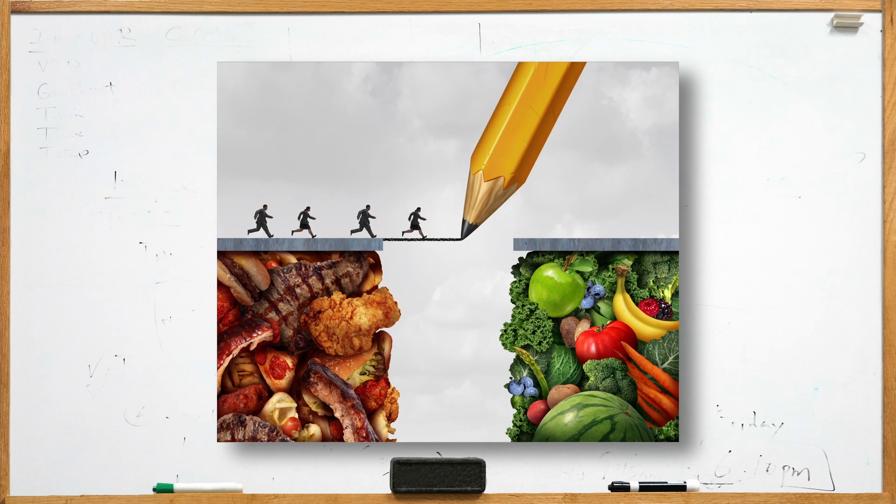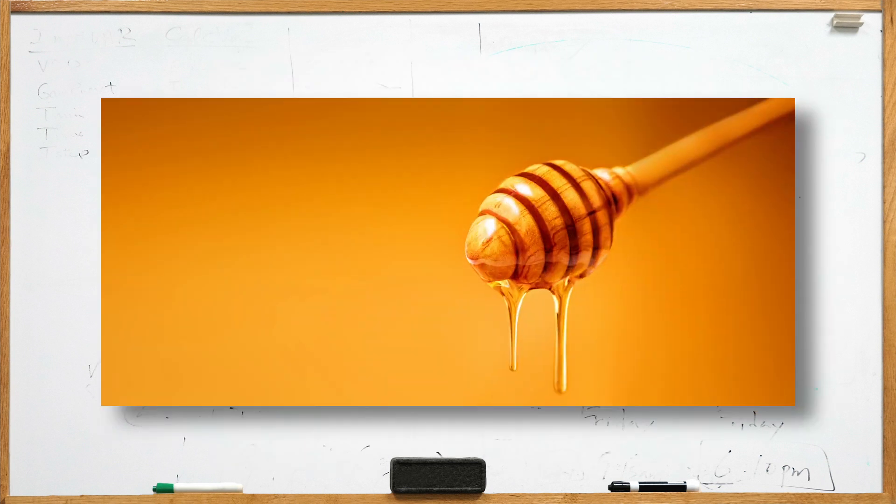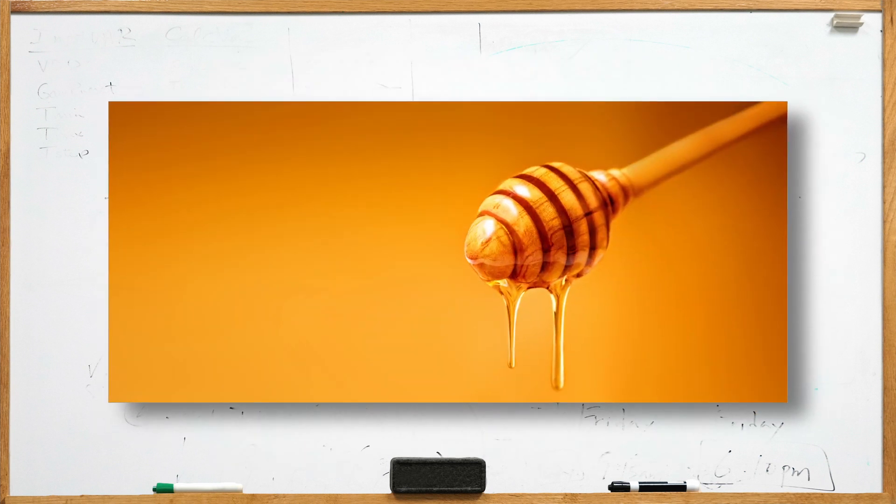Honey. Veganism means that you don't consume anything that is a product of the animal kingdom. Since honey is a product of bees, it is technically not vegan, although some choose to overlook that.